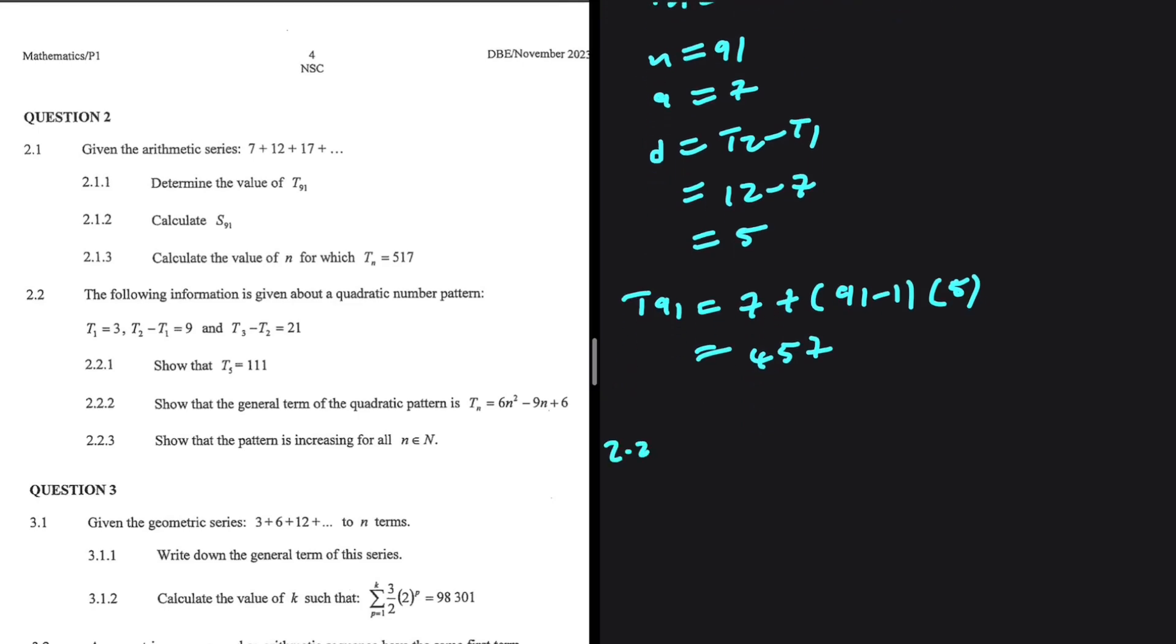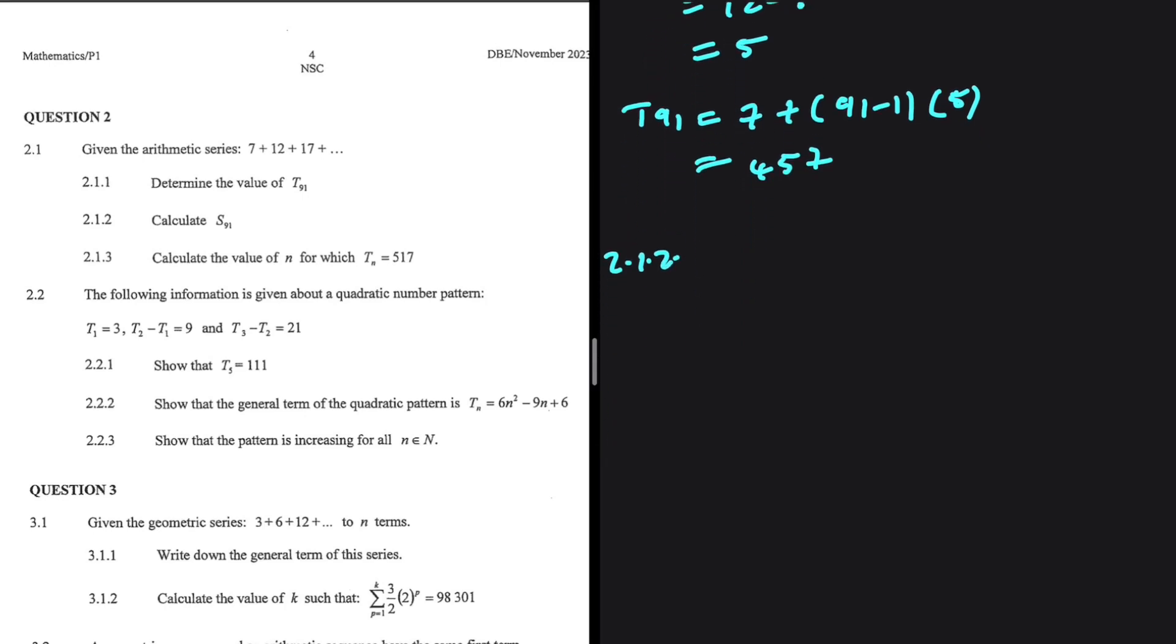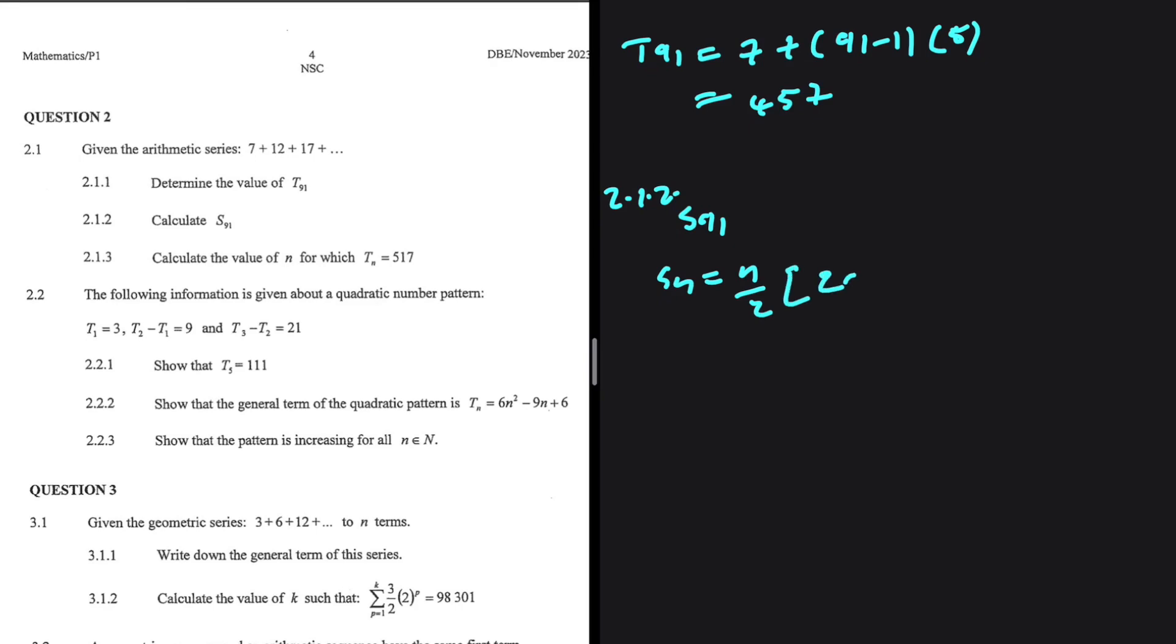2.1.2, on the other hand, we want to calculate the sum of the first 91 terms. There's a formula for that. The sum is given by N divided by 2 multiplied by 2A plus N minus 1 multiplied by D. N is the number of terms.